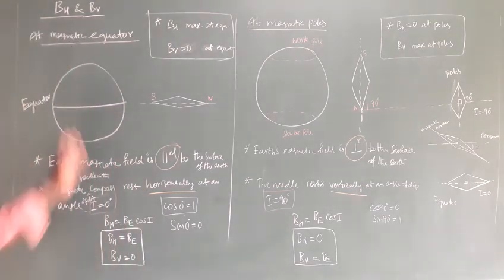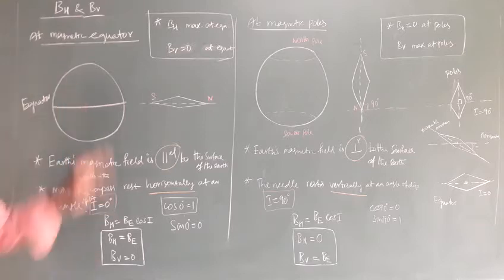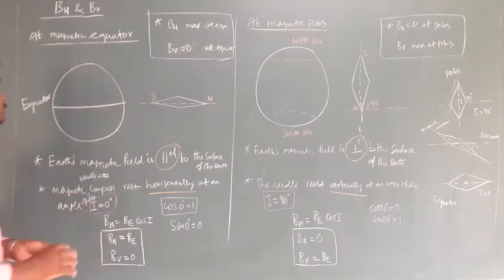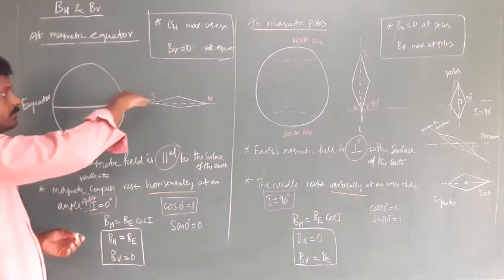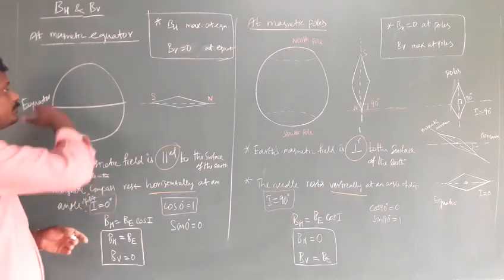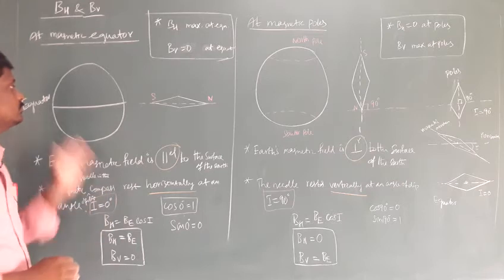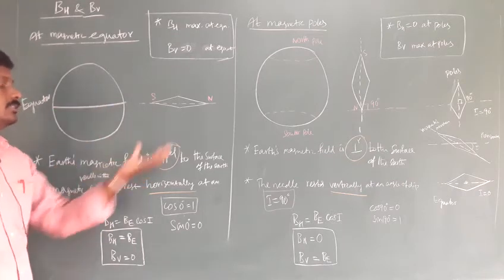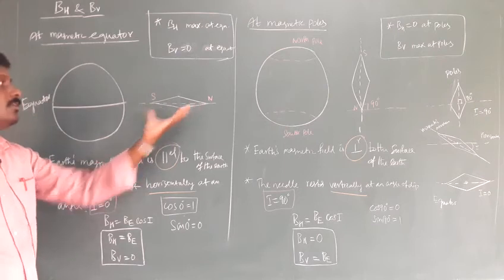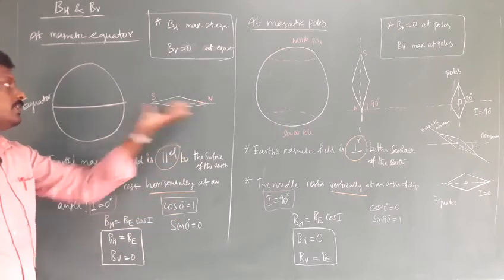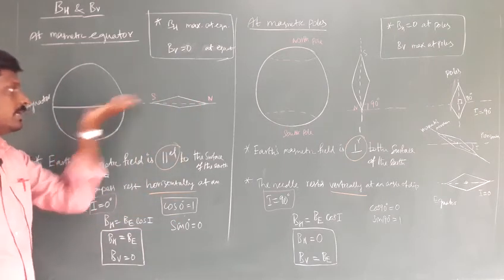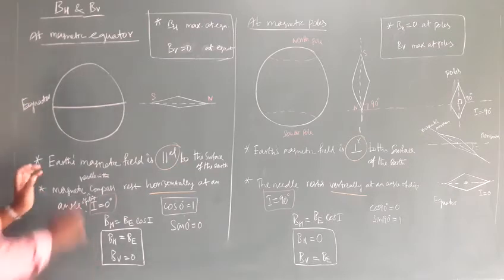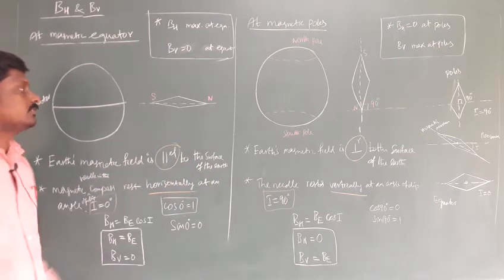We are going to discuss what is the horizontal component and vertical component at the magnetic equator. This equator passes through the half of the earth. At the equator, the magnetic compass needle rests parallel to the horizontal component — that is, Earth's magnetic field is parallel to the surface of the earth.